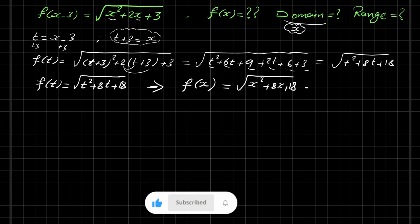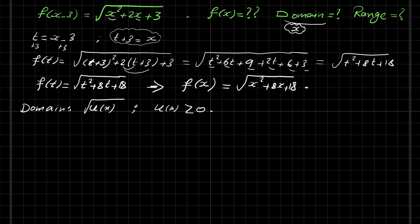f(x) equals square root of x squared plus 8x plus 18. Whenever we have square root of u(x), we must have u(x) greater than or equal to 0. Let's rewrite it.